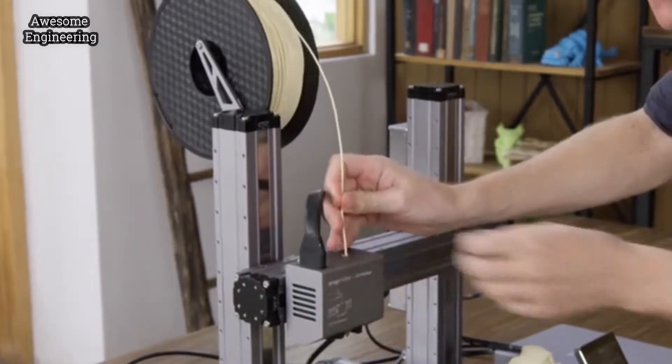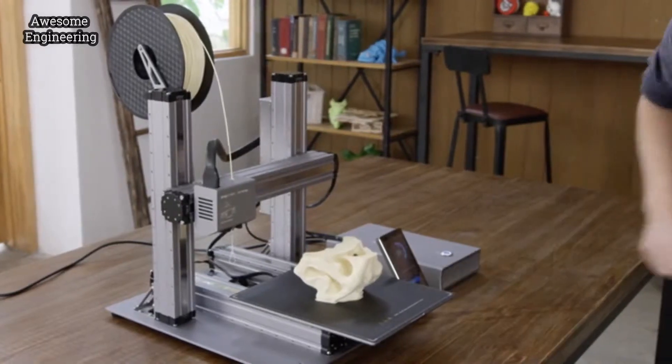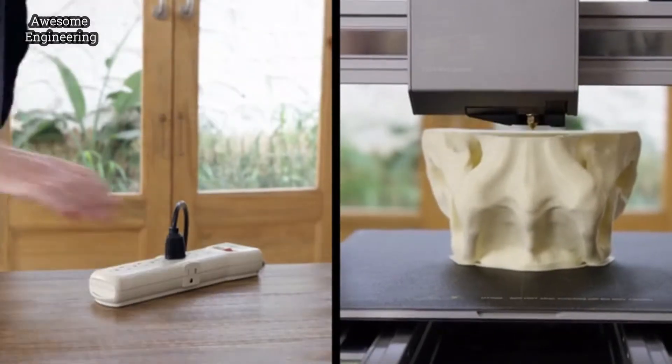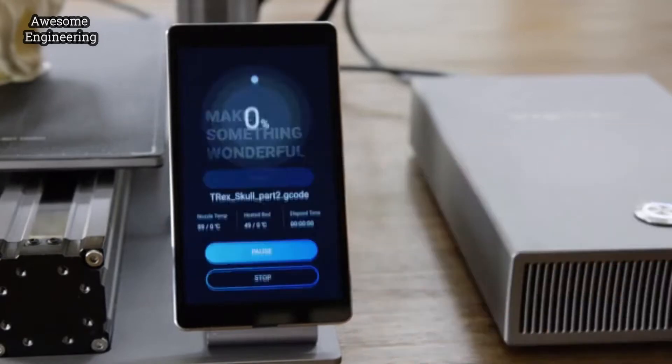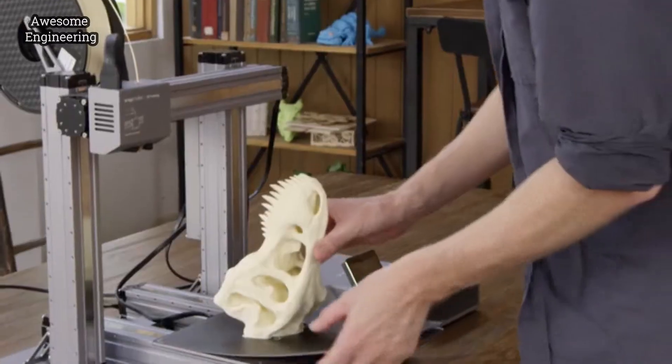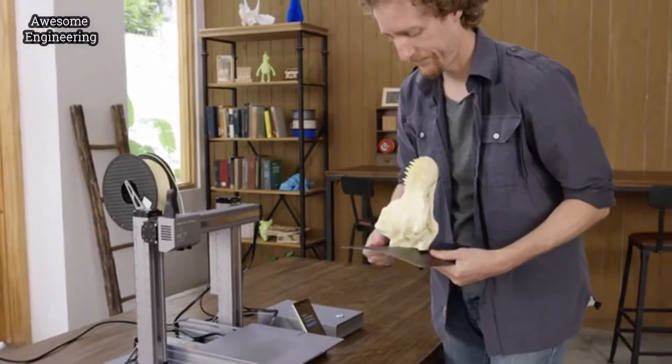It can also detect power loss and resume exactly where it left off, so you can recover any project. To remove a print, simply lift the build plate and flex it.